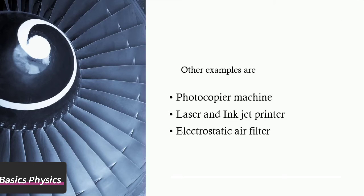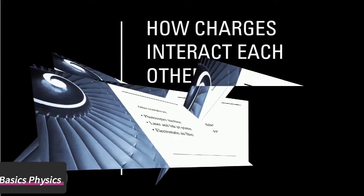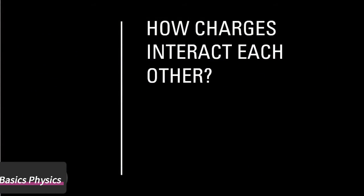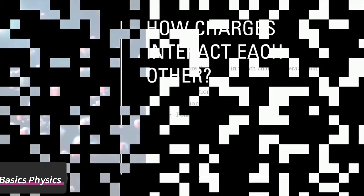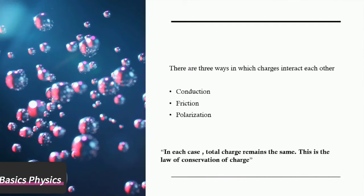How do charges interact with each other? There are three ways in which charges interact with each other: conduction, friction, and polarization. In each case, total charge remains the same. This is the law of conservation of charge.